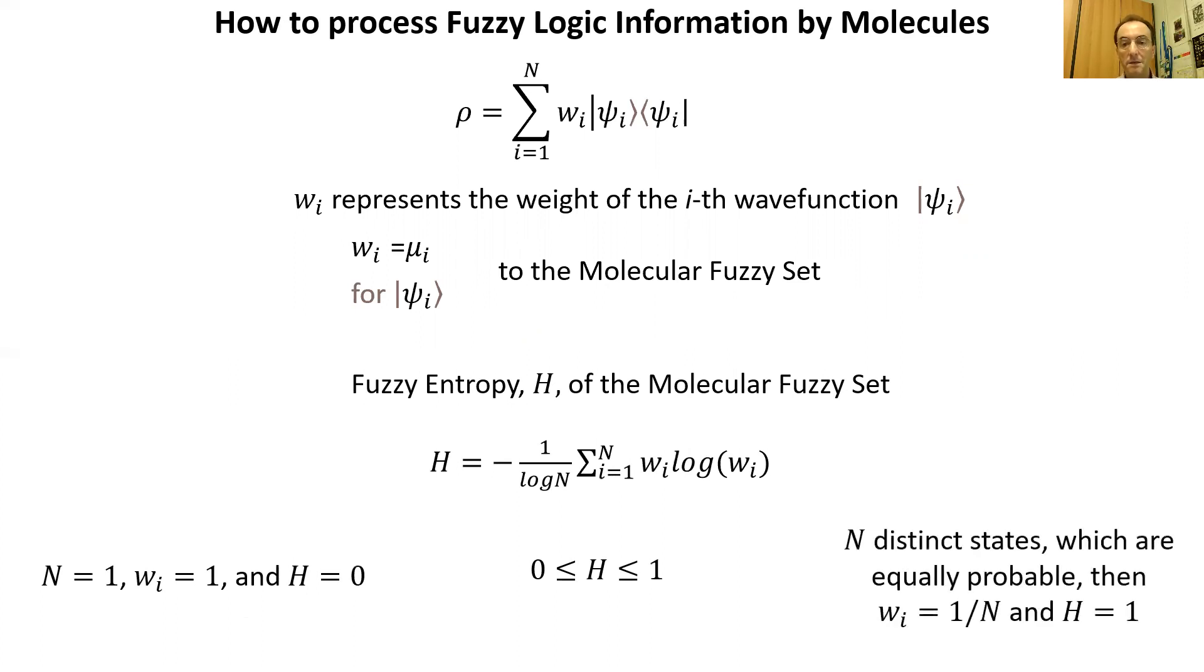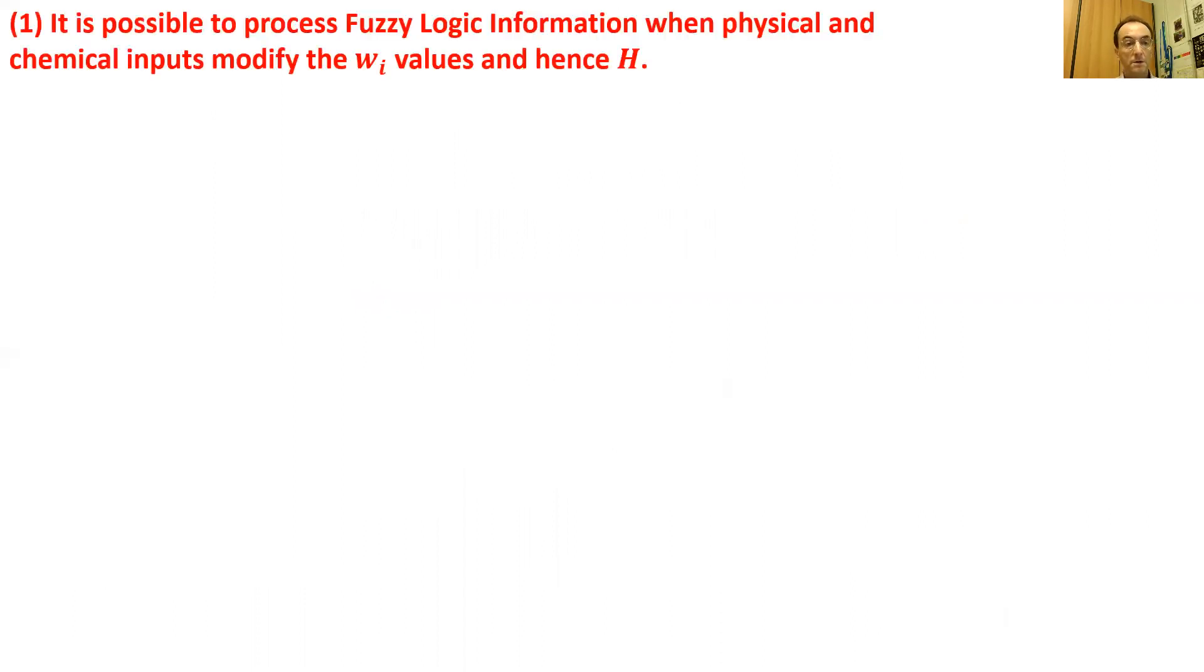Of course, there is an infinite number of other possibilities which originate H values included between 0 and 1. The ensemble of N states constitutes a molecular fuzzy set. It's possible to process fuzzy logic information when physical or chemical interactions modify the weight values and hence modify the fuzzy entity. The estimation of the weight values appearing in H can be accomplished by recording spectroscopic time-resolved signals and fitting any transient signal through the maximum entropy method. The maximum entropy method fits a transient spectroscopic signal by using a polyexponential function.